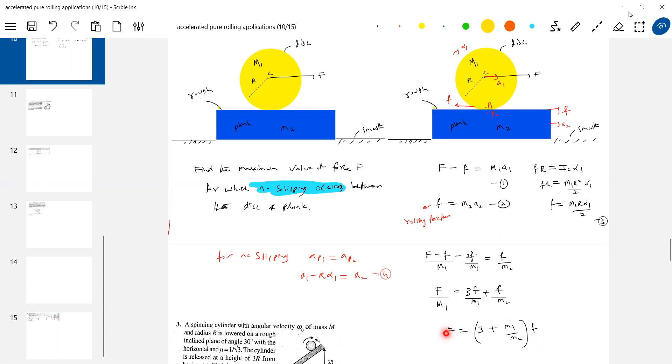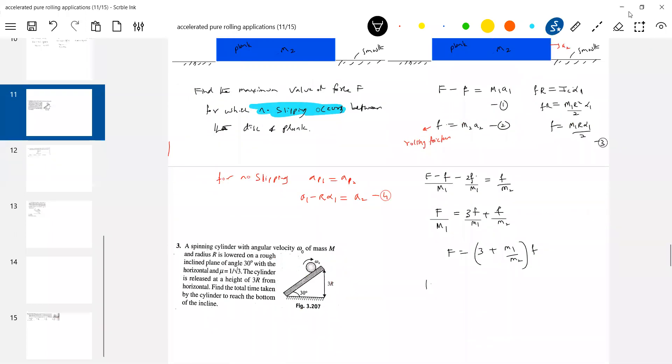Then if you apply force, there's a maximum permitted value of applied force, because what is the maximum permitted value of rolling friction? Equal to limiting friction, mu S M1 G here. So that is the maximum permitted value of applied force here. I think that was the question asked. Find the maximum value of force for which no slipping occurs here. So from this I can bring F max is equal to 3 plus M1 by M2 into mu S M1 G.